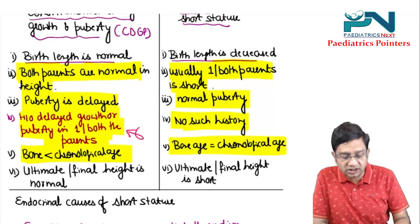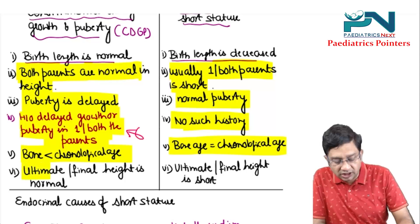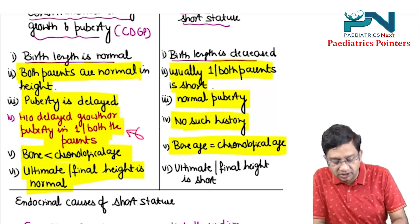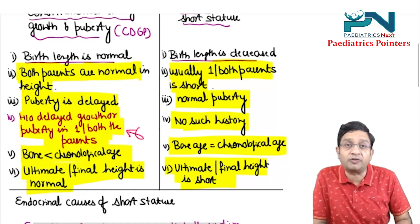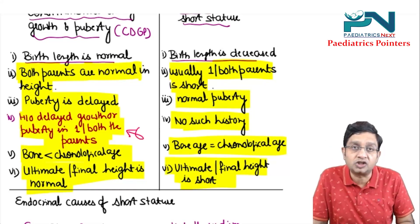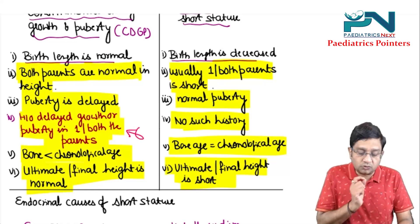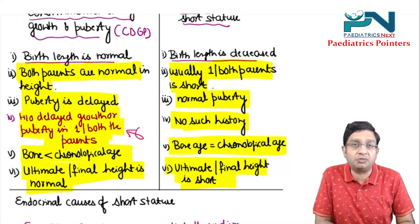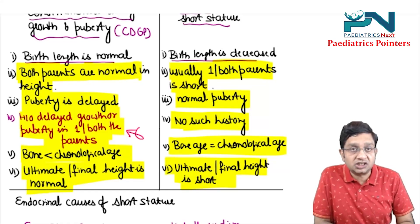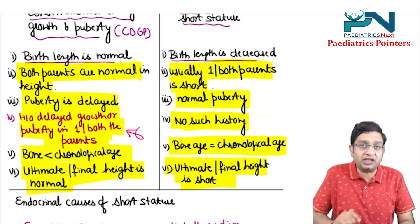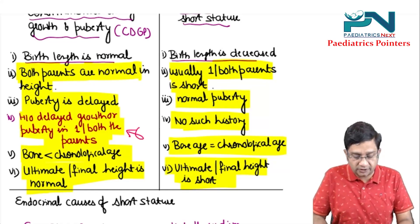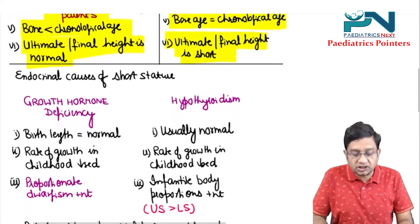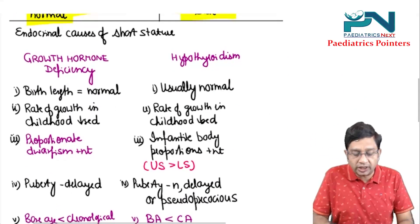In CDGP, the ultimate or final height is normal, whereas in Familial Short Stature the ultimate or final height is short. This covers the differentiation between CDGP and Familial Short Stature.